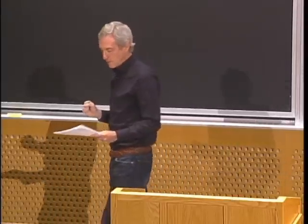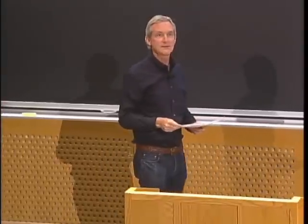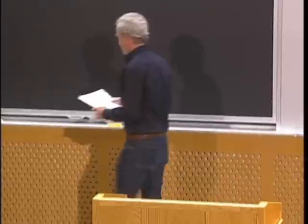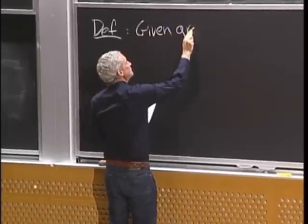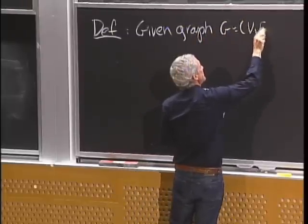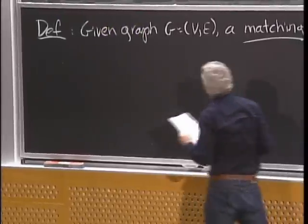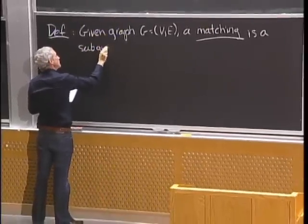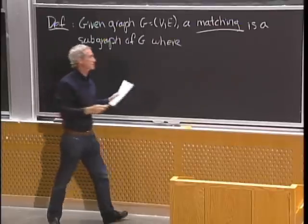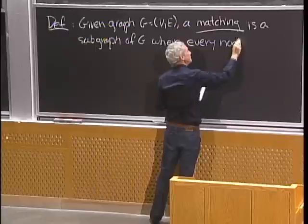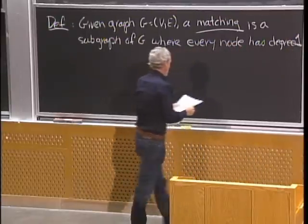In its simplest form of a matching problem, you have a graph where the edges represent compatibility. Two nodes can be paired together or married, and the goal is to create the maximum number of compatible pairs. Let's define a matching. Given a graph G with nodes V and edges E, a matching is a collection of edges or a subgraph of G where every node has degree one. So everybody can be married to just one person.